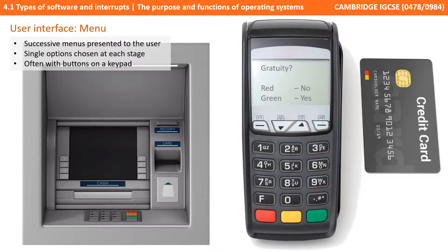Another type is the menu-driven interface. This is the sort you're going to find at cash points and on chip-and-pin devices. In this example, we see a chip-and-pin device asking the user whether they want to give a gratuity, a tip, and the user chooses yes or no depending on the buttons they press. So we have successive menus presented to the user with a single option chosen at each stage, and you often interact with them via buttons on a keypad.